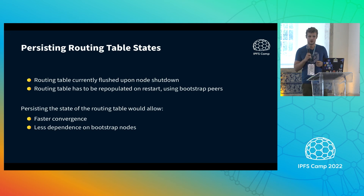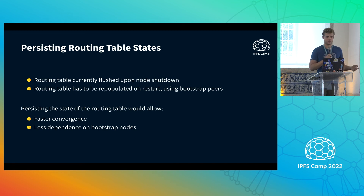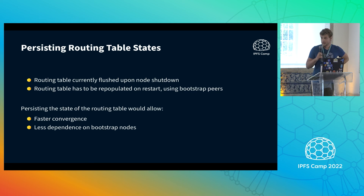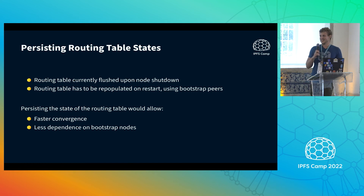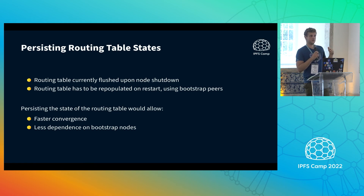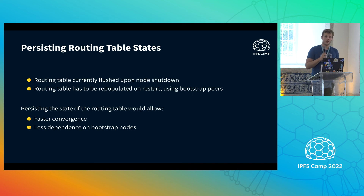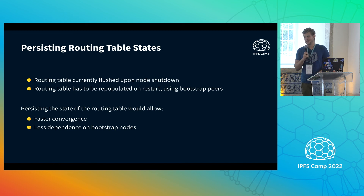A potential improvement: currently when an IPFS node leaves the network — you shut down your computer or kill the Kubo process — everything is flushed. When you restart, you have to re-insert yourself into the DHT and redo all lookups to get to know other peers. What could help fight centralization and speed up the boot process is to persist state: when you shut down, write your routing table or peer list to disk. When you boot up, contact those same peers again to converge much faster and avoid pulling the central bootstrap nodes directly into your routing table, since those are the most popular and stable ones. This way they get fewer requests and we achieve faster convergence.